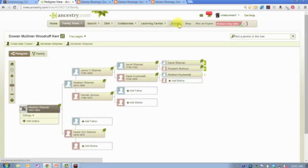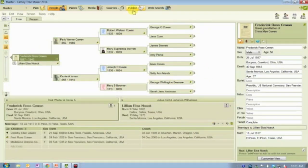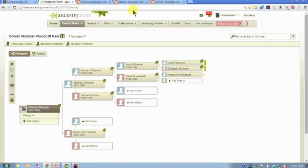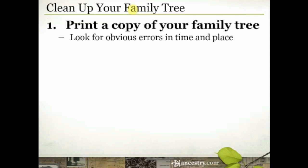The publish button on Ancestry will help you do it from your tree, and in Family Tree Maker you also have a publish feature there. The idea is to print a copy of your family tree and look for obvious errors in time and place, particularly the further back you go. Pay attention to things like: was somebody born and died in England and yet their child was born in North Carolina? Was this woman born a century after her child? I'm notorious for transposing dates — instead of 1783 I'll put in 1873. Look for those kinds of obvious things.